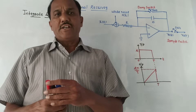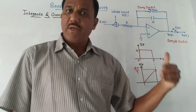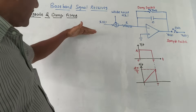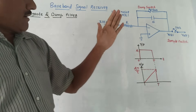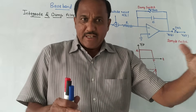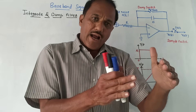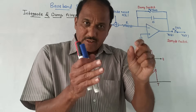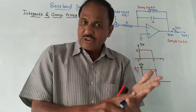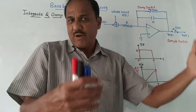Hello and welcome back to this channel. Today's topic is baseband signal receiver from the subject digital communication. If the data is binary and you are transmitting through some channel, noise is always getting added. At the receiver you have to make the decision whether the received bit is zero or one. This is called decision making of the received signal, and certain circuitries are required for this.